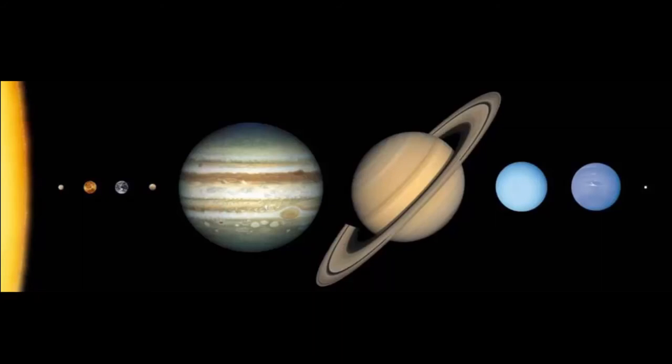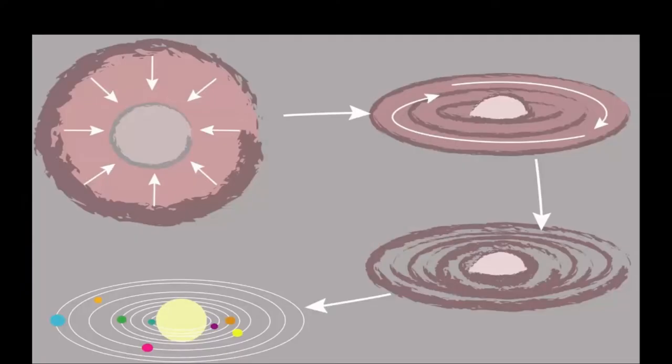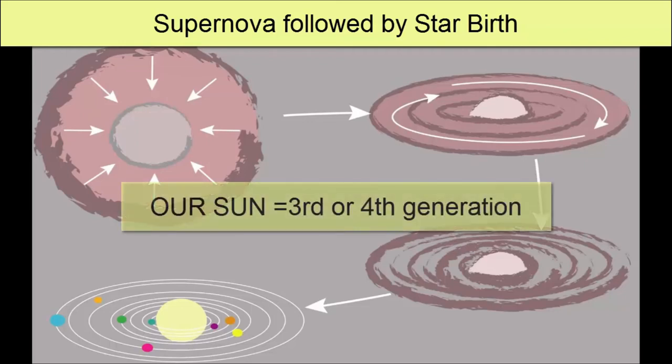Turns out that to create rocky planets the size of Mercury, Venus, Earth, Mars, and some of the rocky moons in our solar system, multiple episodes of star deaths, supernovas, and subsequent births from the remnants were necessary to cook up enough of the required heavy elements. Astronomers believe that our Sun is likely a third or fourth generation star.